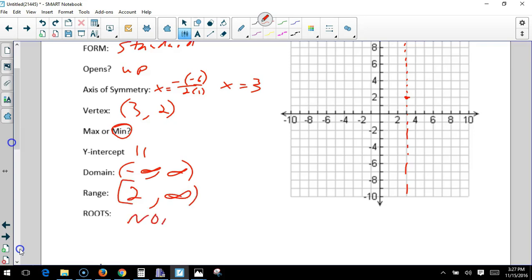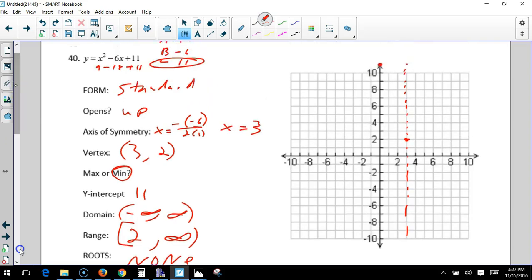Roots? None. I'm going to get some more points off of my calculator. Even though I can get a pretty good idea with the left side. 1, 6; 2, 3; 5, 6; 4, 3; and 6, 11. That gives me a general shape of my parabola.